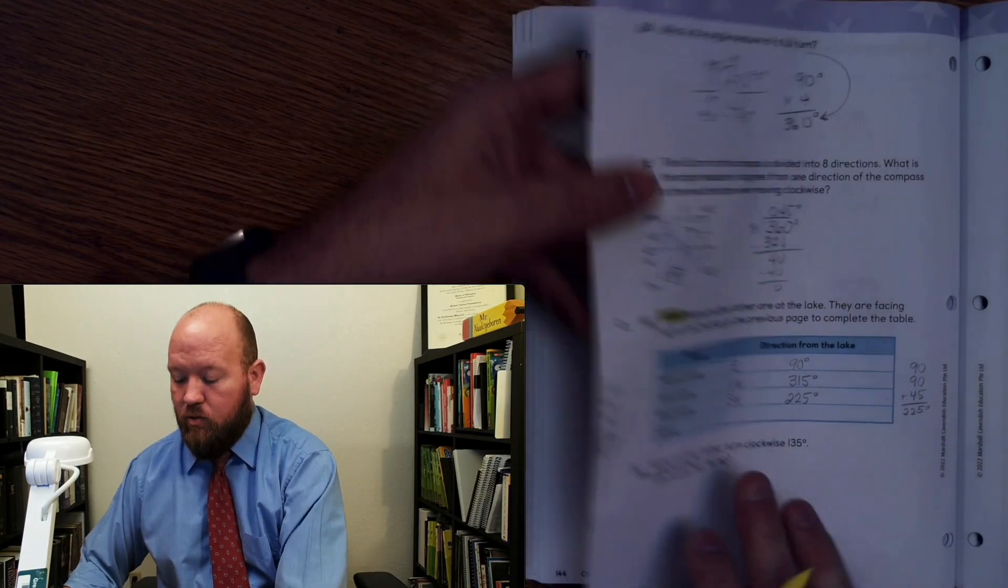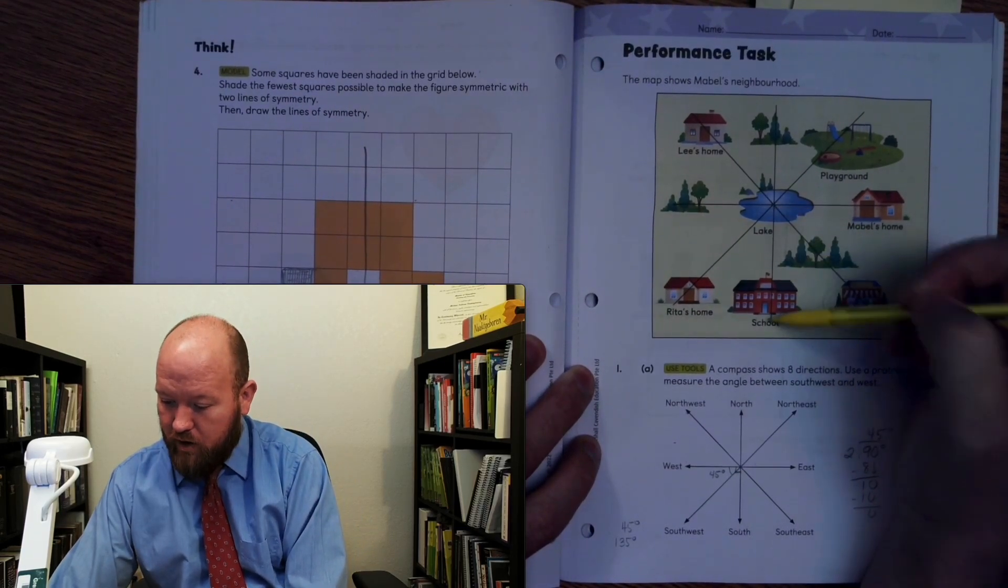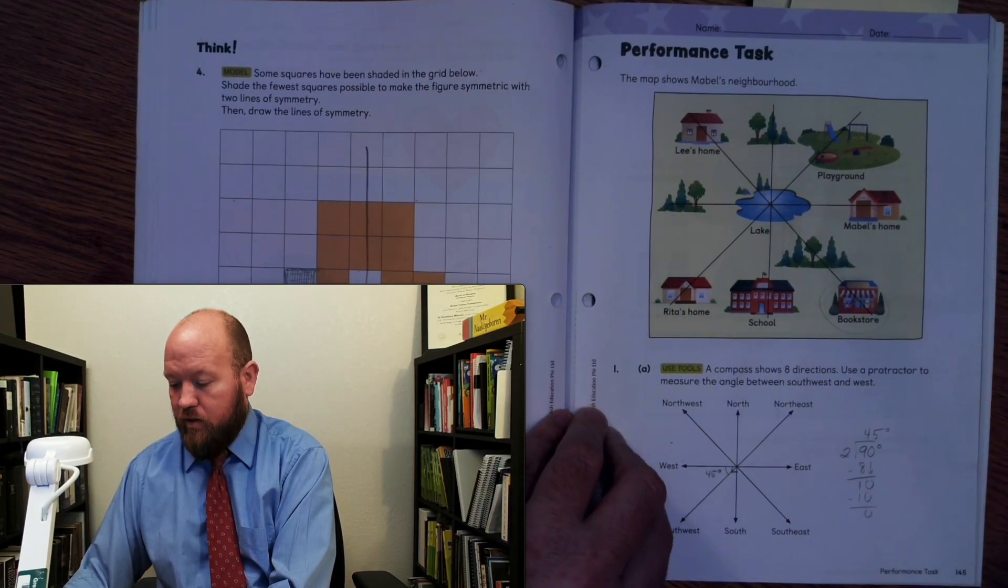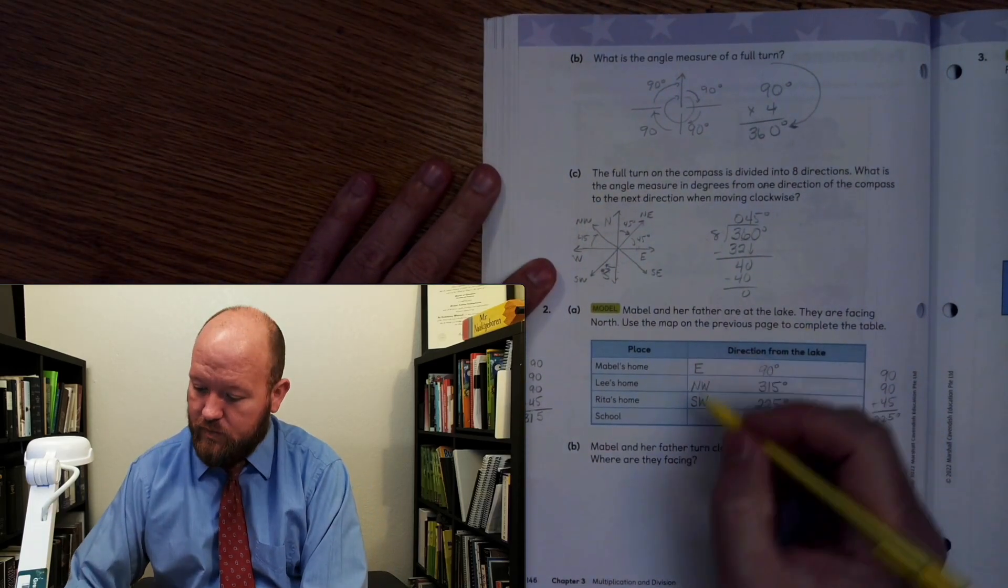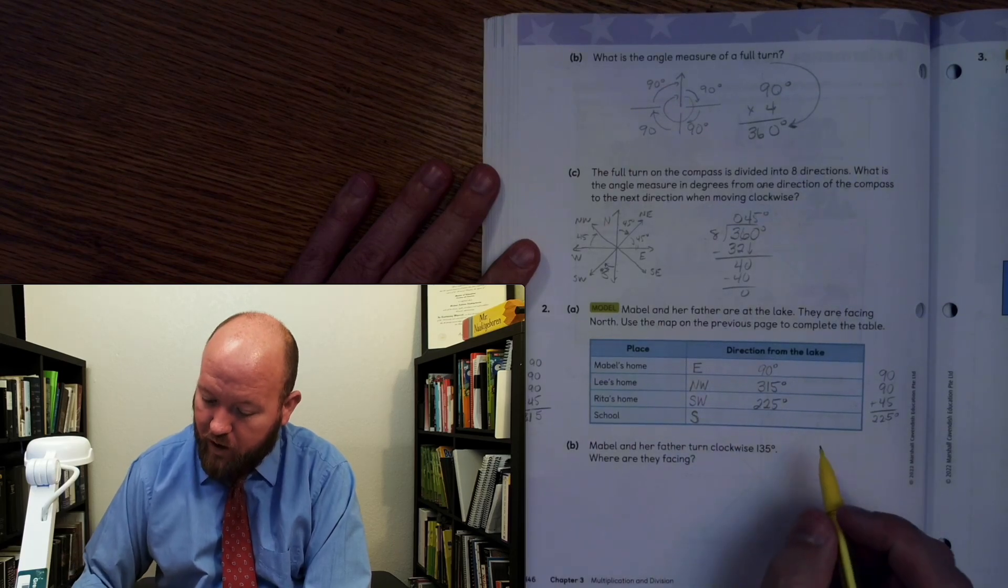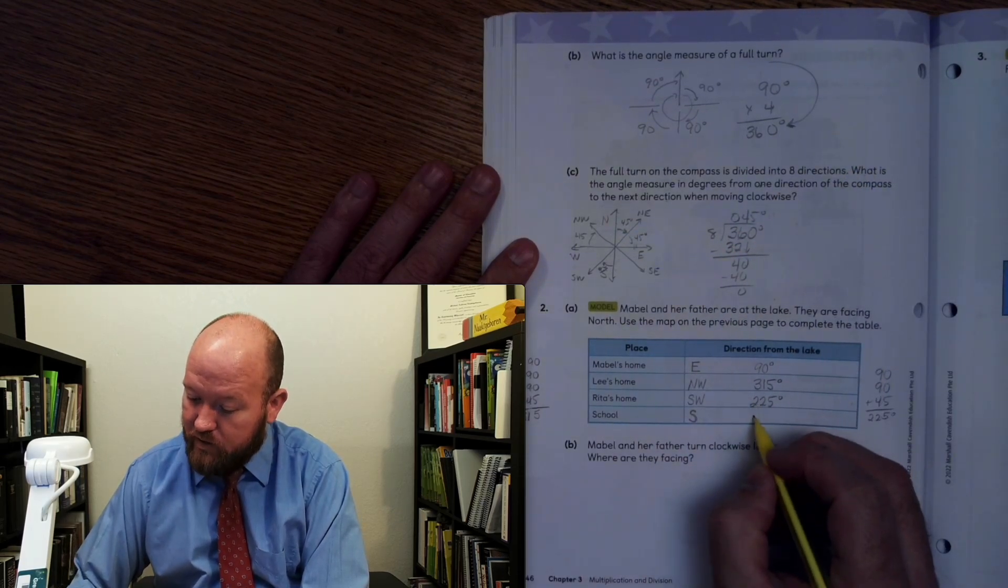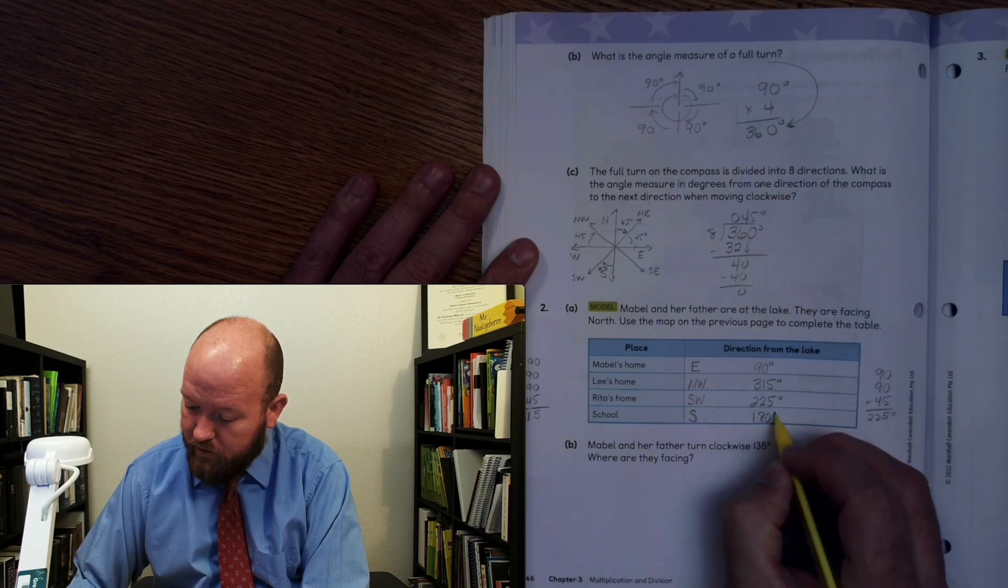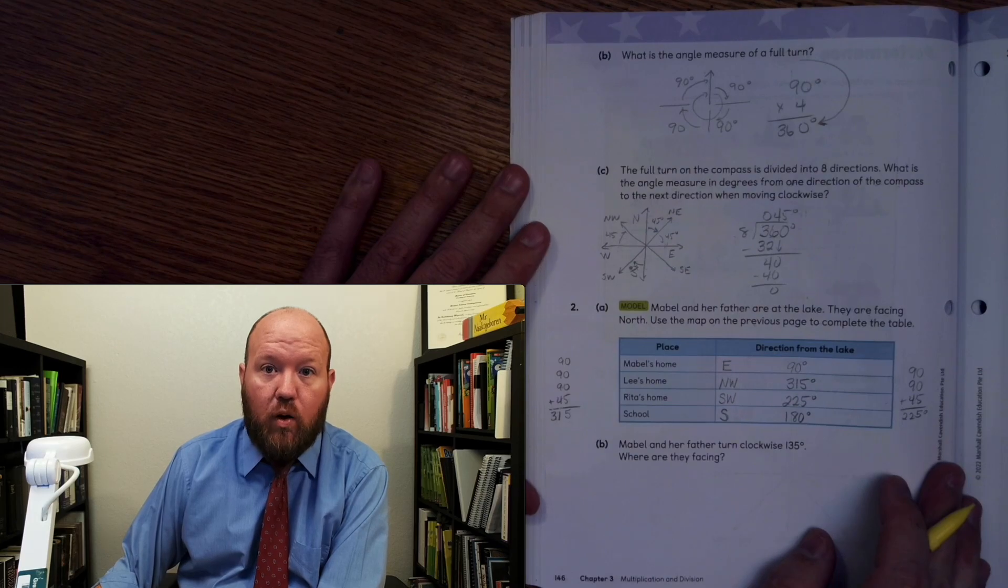All right. What about the school? All right. We see here the school is straight down. Straight down is south. Now this one you might already know because this is one of the ones you want to memorize. But if I'm facing north and I need to turn to go south, I have to turn 190 degrees, 290 degrees. And 290 degrees is 180 degrees. And that's also a straight angle and a straight angle is equal to 180 degrees.